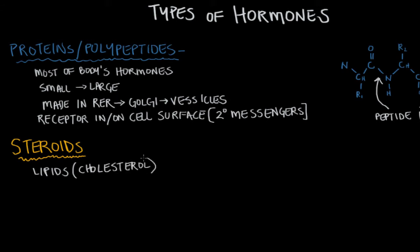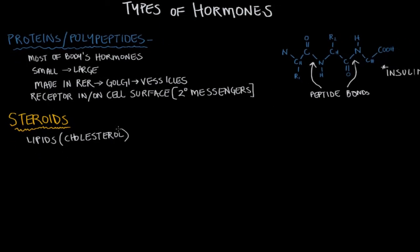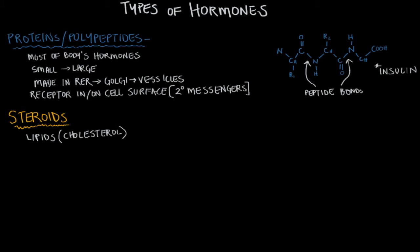Because steroids come from cholesterol, they have a really characteristic structure that they all share. I went ahead and pre-drew that — I'll fade it in now. This is the characteristic steroid backbone. You can see there are four ring structures: three cyclohexane rings, or six-membered carbon rings, and one cyclopentane ring. I'll label those A, B, C, and D.